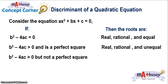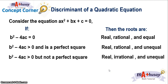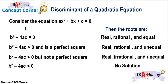If b² − 4ac is greater than zero but not a perfect square, the roots can be described as real, irrational, and unequal. And lastly, if the discriminant b² − 4ac is less than zero, then the equation ax² + bx + c = 0 has no solution.